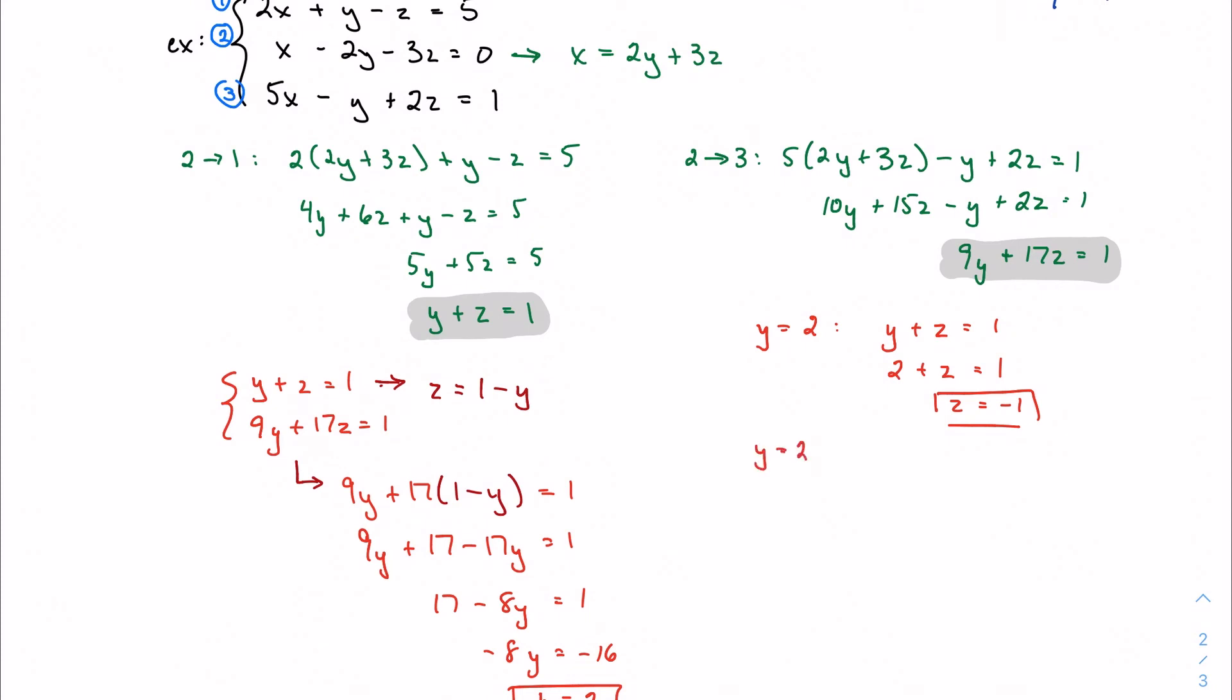So if y is two and z is negative one, then we know that x is two y plus three z. So it's two times two plus three times negative one, four minus three is one.